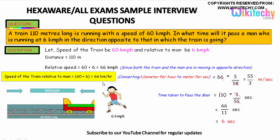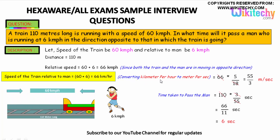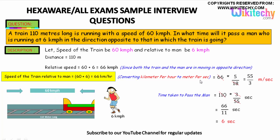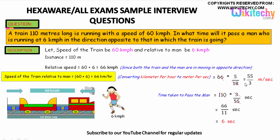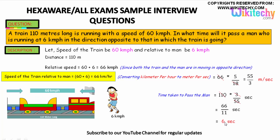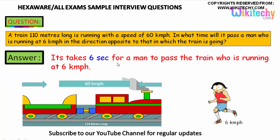We need to convert 66 km per hour into metres per second. Since they are in opposite directions, we want to find how much time it takes for them to meet. Converting kilometres per hour to metres per second, we multiply by 5/18, giving us 55/3 metres per second. Cancelling, we get 110 divided by (55/3), which equals 6 seconds. So the time taken for the train to pass the man is 6 seconds.